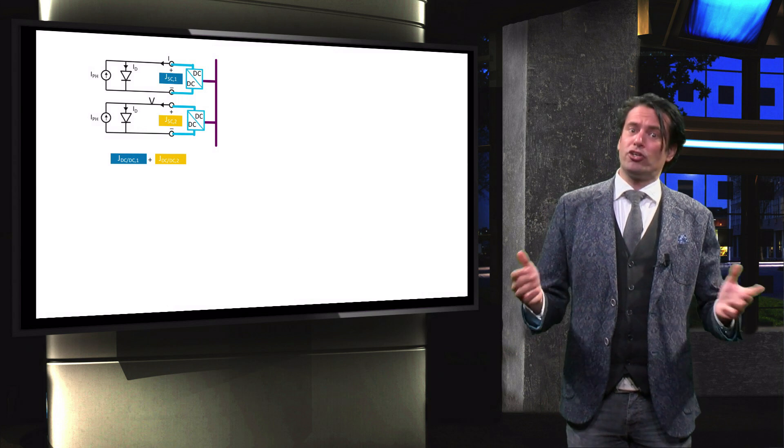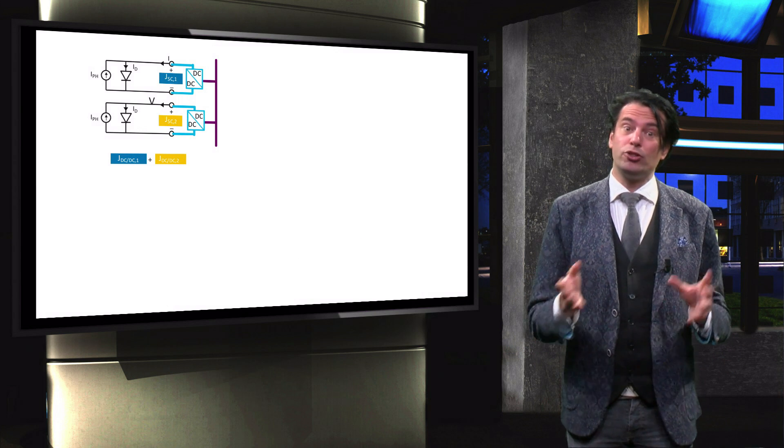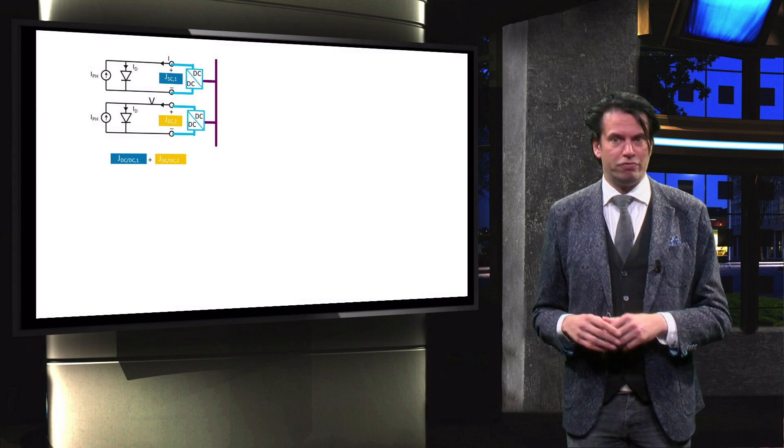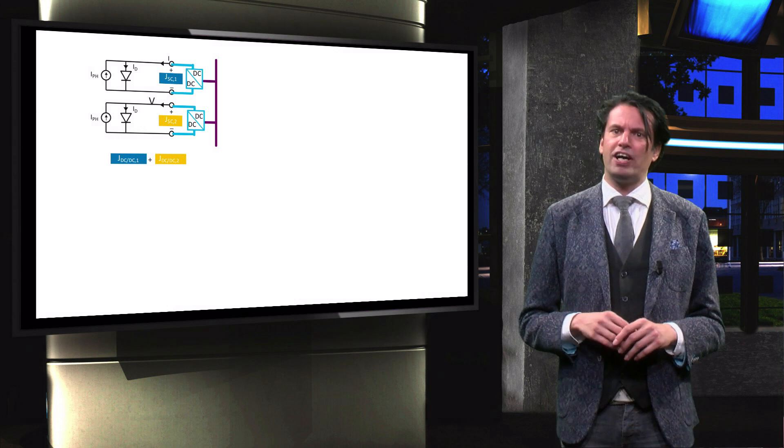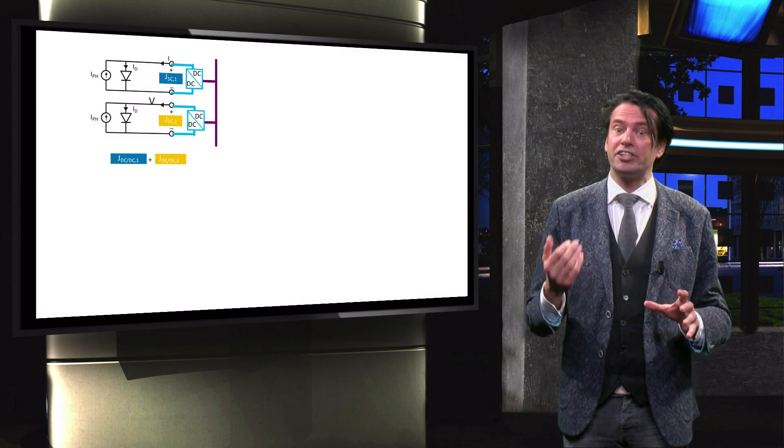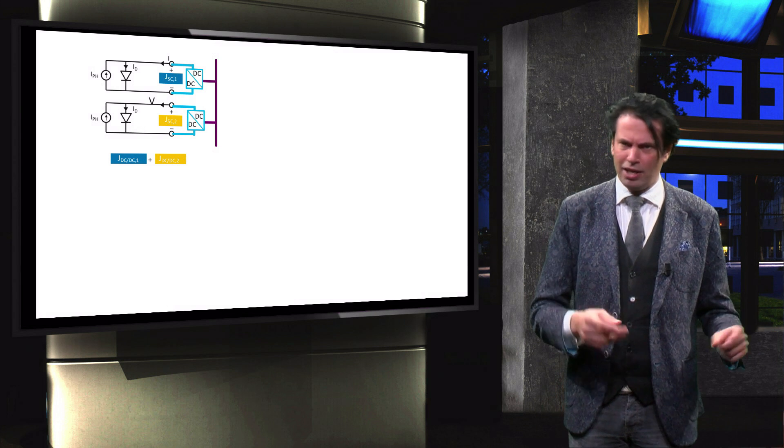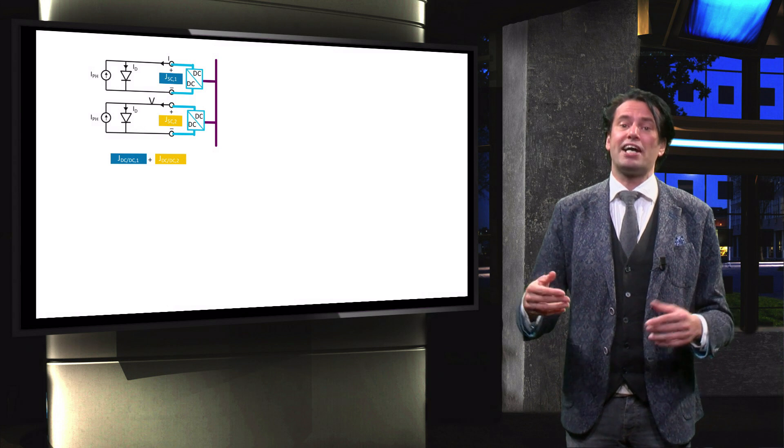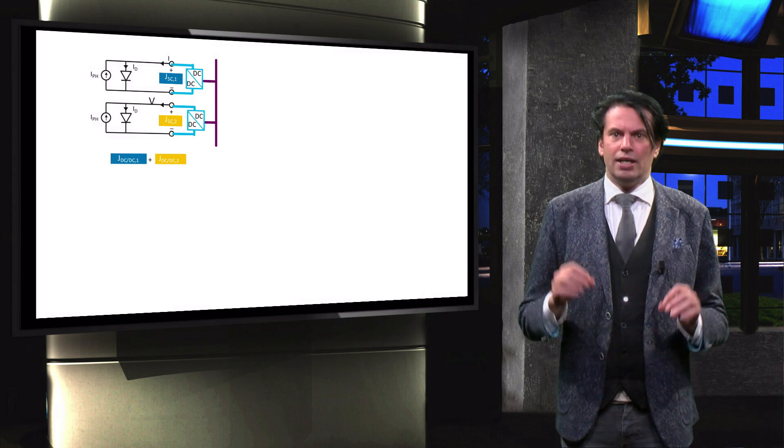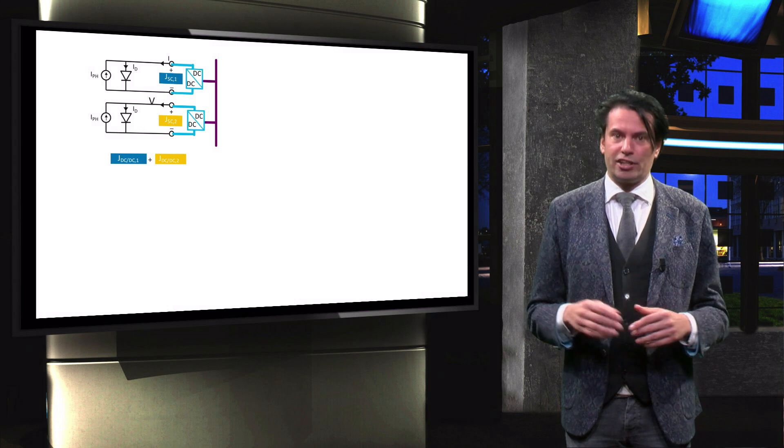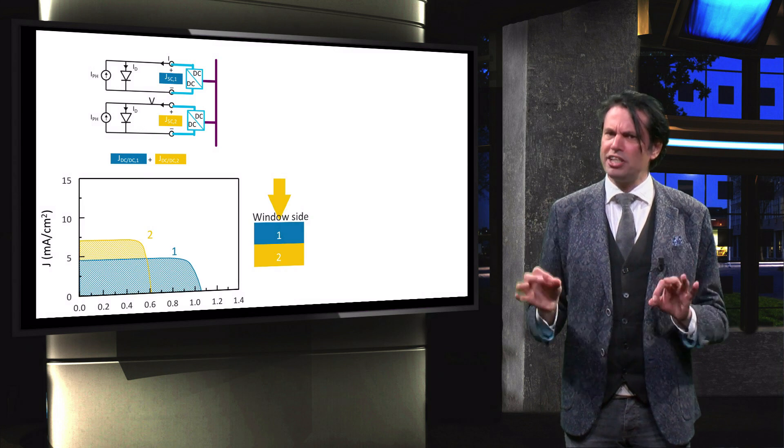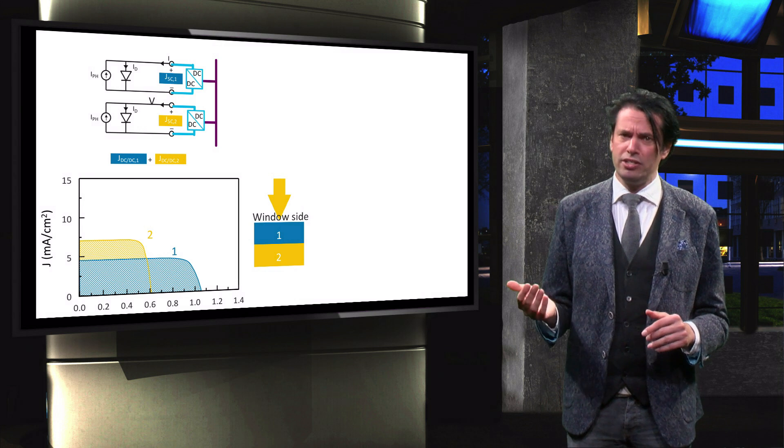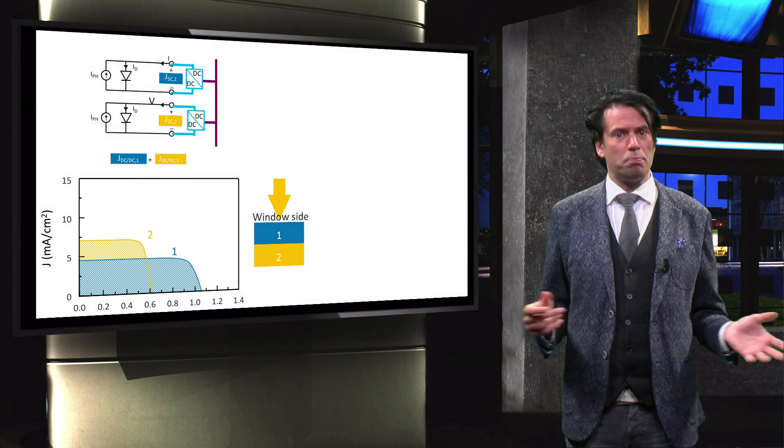In summary, we discussed important differences between the two terminal and the four terminal devices. In the four terminal device, the cells are connected individually to the power electronics. Therefore, the total power is added up of the two individual cells. This is a consequence of the extra two terminals. Due to this separation, the individual cells can operate at their own maximum power points.